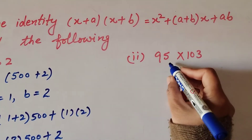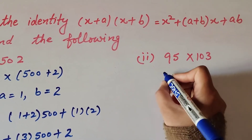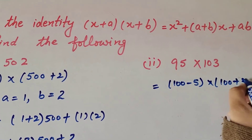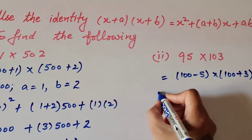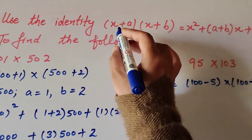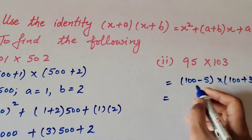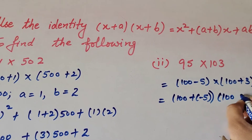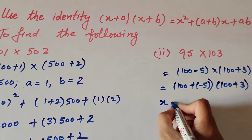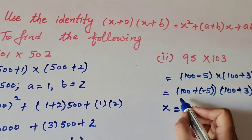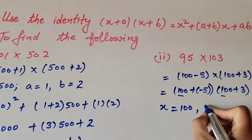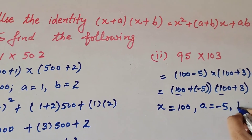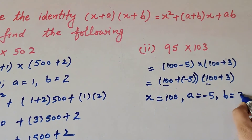Now we move to the second part: 95 × 103. We can also write it as (100 − 5)(100 + 3). In the identity (x + a)(x + b), we write it as (100 + (−5))(100 + 3). So x = 100, a = −5, and b = 3.